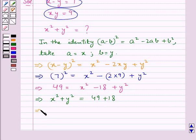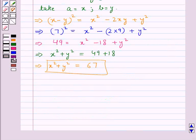This gives us x square plus y square is equal to 67. So we have the value for x square plus y square is 67. Our final answer is 67.